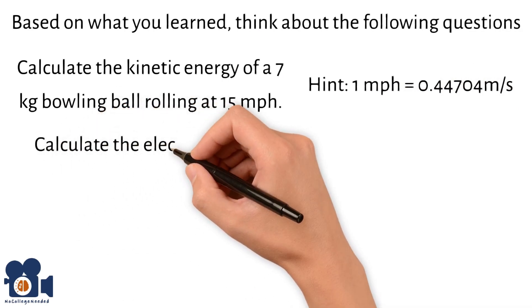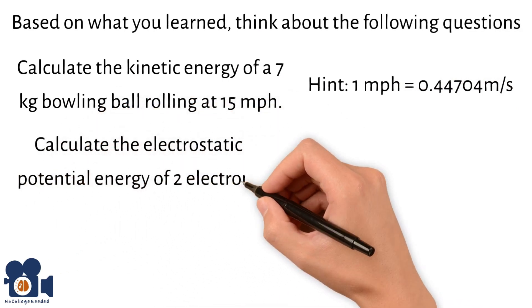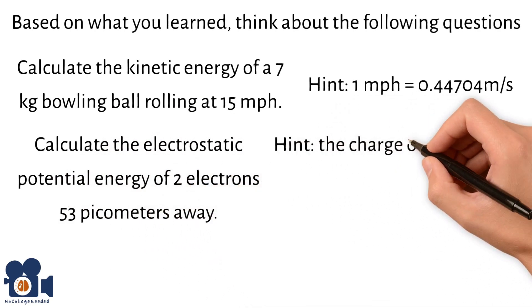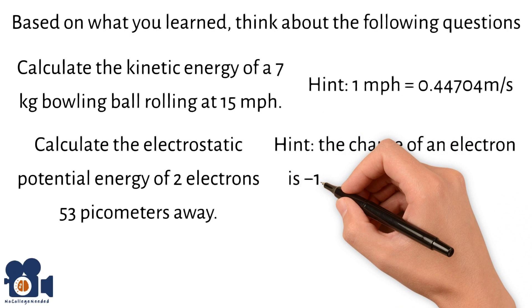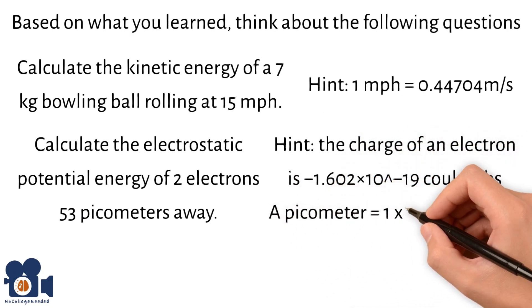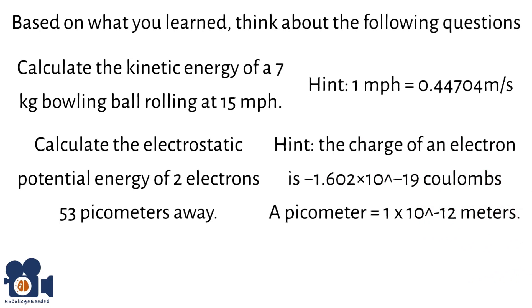And calculate the electrostatic potential energy of two electrons 53 picometers away. Hint: the charge of an electron is negative 1.602 times 10 to the negative 19th coulombs, and a picometer equals 1 times 10 to the negative 12th meters.